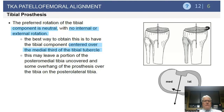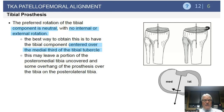Regarding the patellofemoral joint and the tibial prosthesis: in general, we want to rotate the tibial tray in a neutral position with no significant internal or external rotation. Anatomic studies show that in most patients, you center the tibial tray over the medial third of the tibial tubercle. If you have a Q angle over 15 degrees native, that tibial tubercle may be more lateralized. But for most people, center the tray over the medial third of the tibial tubercle.